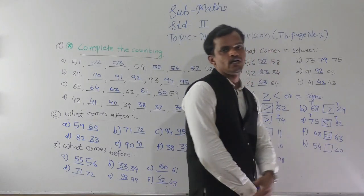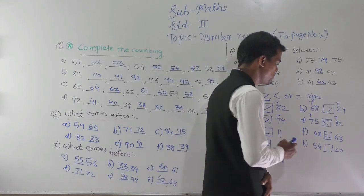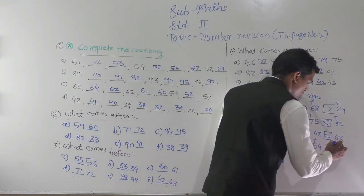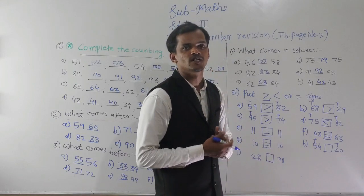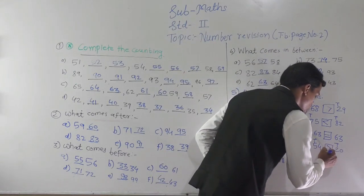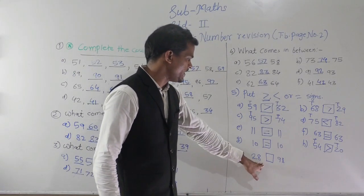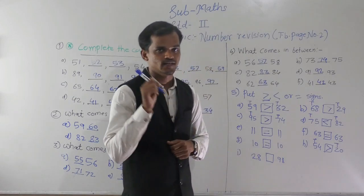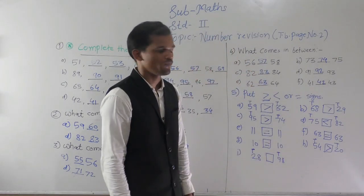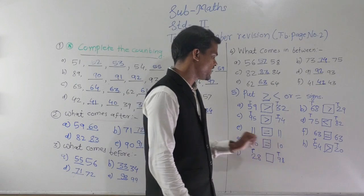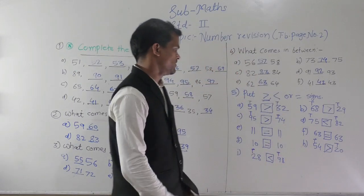Then 54 and 20 — compare the tens digit: 5 tens and 2 tens, which is bigger? Five tens. So the greater than sign will come here. Then the last one: 28 and 98 — compare the tens digit: 2 is at tens place and 9 is at tens place. 2 tens and 9 tens — which is bigger? 9 tens. So this sign will come here.